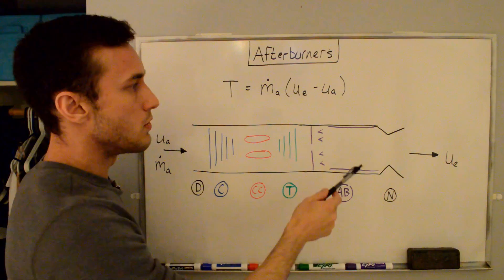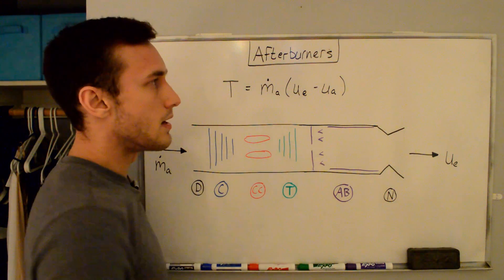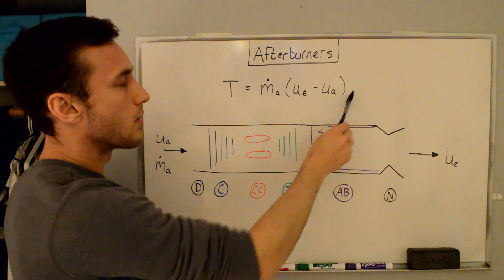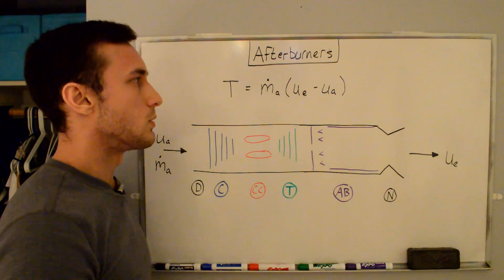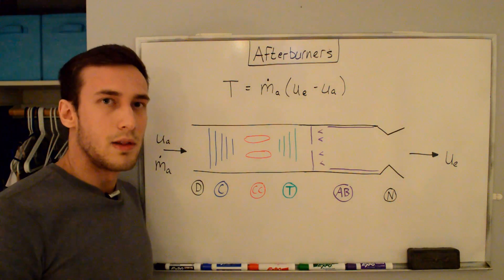When you don't have this, what you get is a different pressure at the exit than out in the atmosphere, and you get another pressure thrust term up here in the thrust equation, which I've neglected in this case.